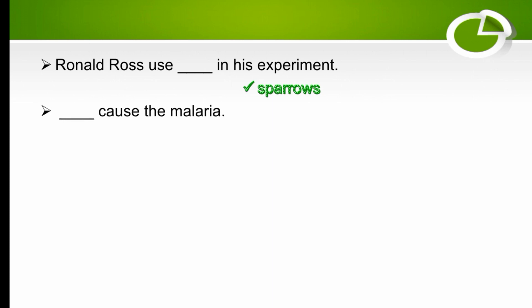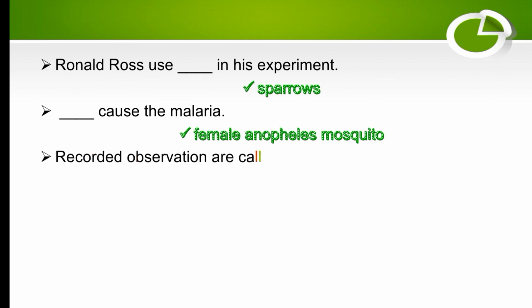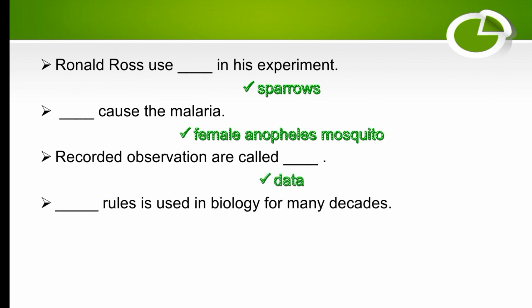What causes malaria? The right answer is the female Anopheles mosquito. Recorded observations are called data. Mathematical rules are used in biology for many decades.